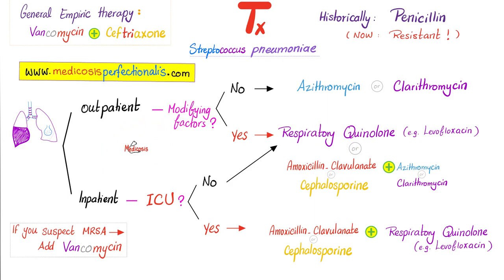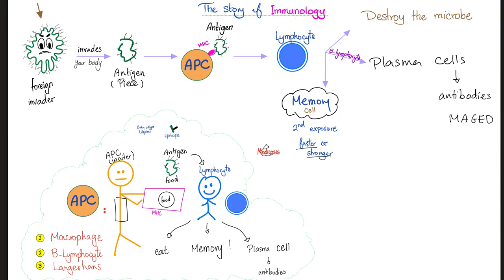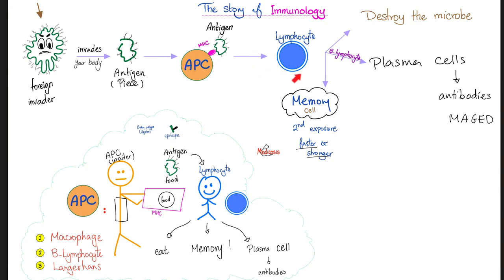Let's review the story of immunology. Here is a bacteria invading your body — this could be Streptococcus pneumoniae. When you take a piece of the bacteria, that piece is called the antigen. The antigen-presenting cell will present the antigen to the customer — the lymphocyte, usually a T-lymphocyte.